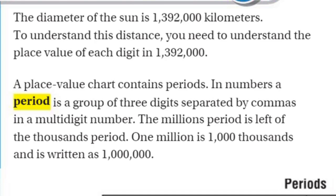It's separated by commas, but we call it a period. So don't be confused — a period is kind of like a group, a period of time we think of it. This three digits, separated by commas, is a period. The millions period is left of the thousands period. One million is one thousand thousands and is written as 1,000,000.